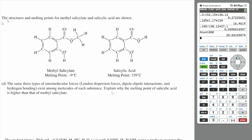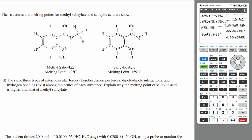Part D: The same three types of intermolecular forces — London dispersion forces, dipole-dipole interactions, and hydrogen bonding — exist among molecules of each substance. Explain why the melting point of salicylic acid is higher than that of methyl salicylate. Methyl salicylate actually has a higher molar mass than salicylic acid, so you'd expect more London dispersion forces and a higher melting point, but that's not the case — their melting points are vastly different. To explain this, we have to look at hydrogen bonding specifically.